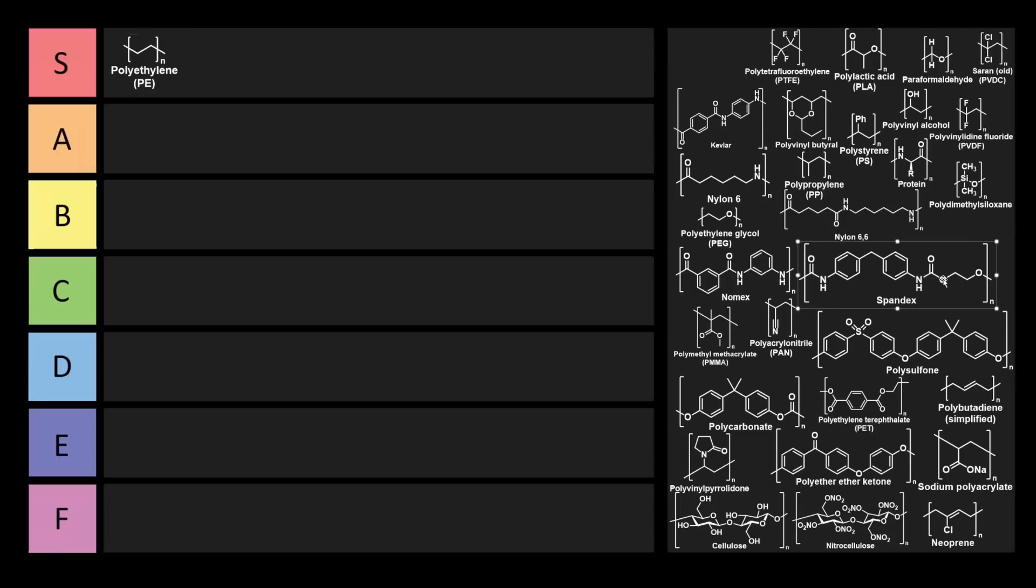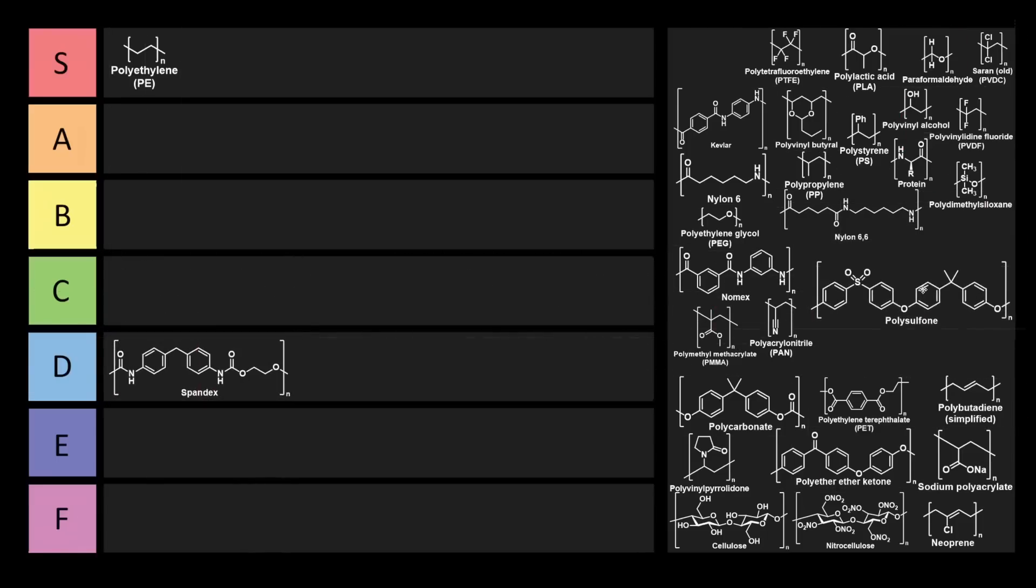Now we have several other ones here. Here we have spandex. A lot of people like spandex for various reasons. It makes form factor for clothing much nicer. This is just one example of a polyurethane with a carbamate linkage made from two different monomers. Spandex has some utility in clothing, but it still has somewhat limited applications, so I think we should put it in D-tier.